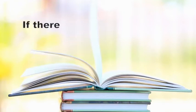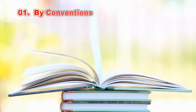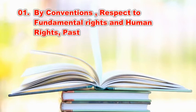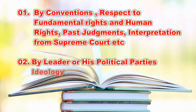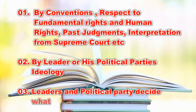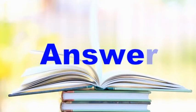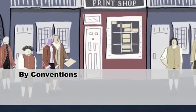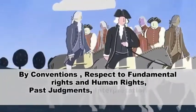Question 4: If there are no proper codified written Constitutions, how do they govern their countries? 1. By convention, respect to fundamental rights and human rights, past judgments, and interpretation from the Supreme Court etc. 2. By the leader or his political party's ideology. 3. Leaders and political party decide what is best for a citizen. Answer: 1 — By convention, respect to fundamental rights and human rights, past judgments, and interpretation from the Supreme Court etc.